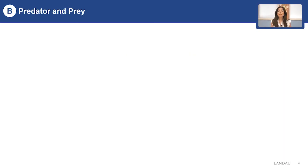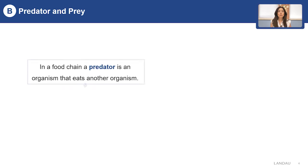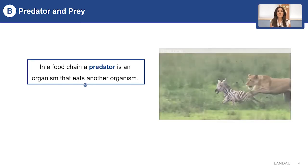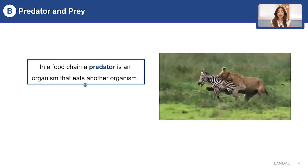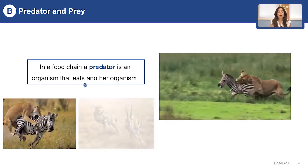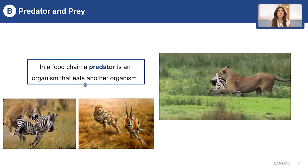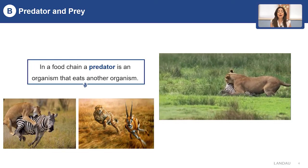Now let's talk about the predator. What is a predator? In a food chain, a predator is an organism that eats another organism. On the screen, you can see how the lion chased the zebra. That means the lion is a predator.